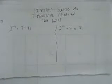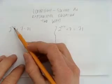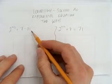This video will demonstrate how to solve an exponential equation two ways. The equation is 2 to the power of x plus 2, plus 7, equals 71.